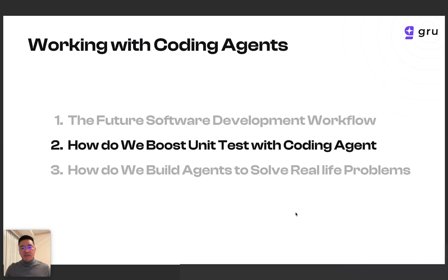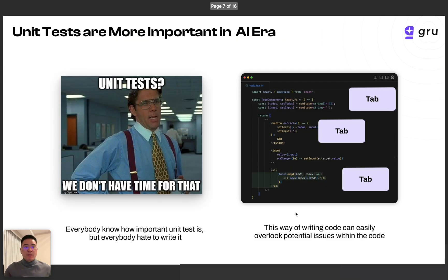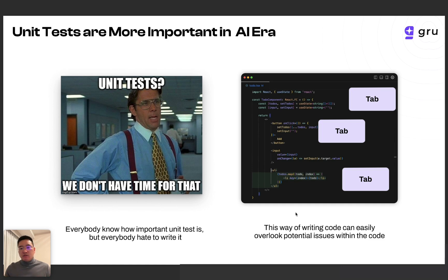Next, I'm going to show you a detailed coding agent which will boost unit tests. I think unit tests are more important today than before, because in the AI era, a lot of code is generated by AI. If you're using Cursor, you must be familiar with tab — for each tab, multiple lines of code across multiple parts of the file are generated. It's very hard to focus on every generation, and you may overlook something. Coding speed is really fast, but it's also easy to generate bugs. One way to prevent this is to write unit tests. People think unit tests are important, but every developer hates to write them. So we built guru, an AI agent to help developers write and manage unit tests.